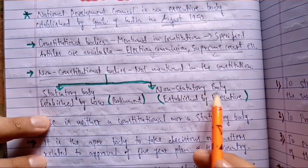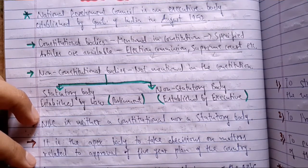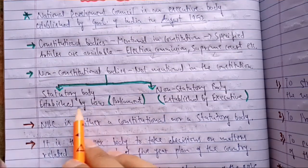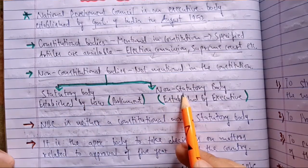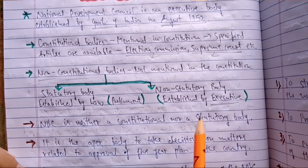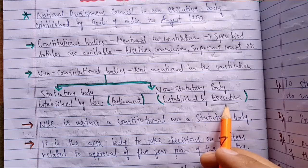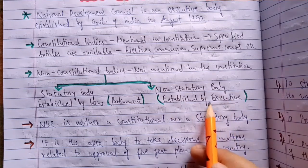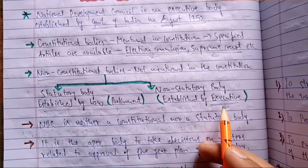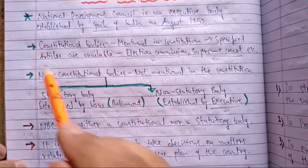Under non-constitutional bodies there are two types: statutory bodies and non-statutory bodies. Statutory bodies are established by law — any laws made by the parliament. You know this process from class 11th: how bills are drafted, brought to Lok Sabha or Rajya Sabha, passed by both houses, signed by the President, and made into law. Bodies made through such laws are called statutory bodies. Non-statutory bodies are established by the executive — the Council of Ministers headed by the Prime Minister — through a simple executive provision.